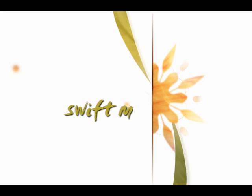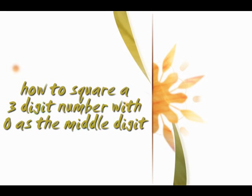Welcome to Swift Math. This video shows a simple and extremely fast method for squaring a three-digit number whose middle digit is zero. Once you understand this method, it should not take more than three seconds to square a three-digit number with zero as the middle digit.